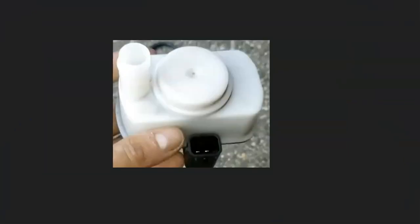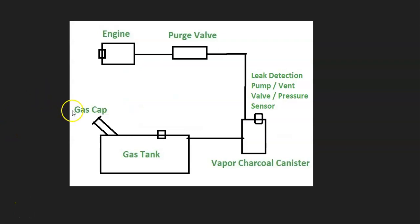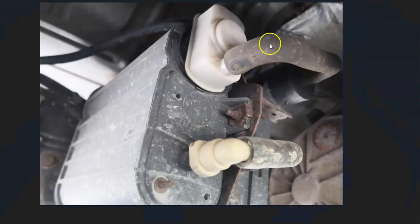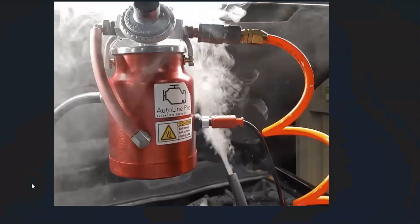After checking the gas cap and the leak detection pump, if everything looks good but you're still getting this code, then very likely there's a leak somewhere inside the system — one of the hoses is leaking or one of the components is leaking, and it will have to be found. You can go around and look at all the hoses to see if anything has become damaged or disconnected, but it can be kind of hard to find a leak in an EVAP system.